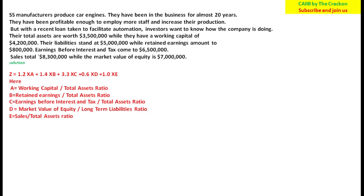Let's write out the given values. Working capital = 42 lakhs, total assets = 35 lakhs, retained earnings = 8 lakhs, EBIT = 65 lakhs, sales = 83 lakhs, and equity (market value) = 70 lakhs. Using all these terms we can now solve the question.